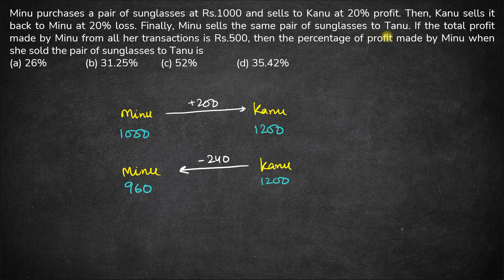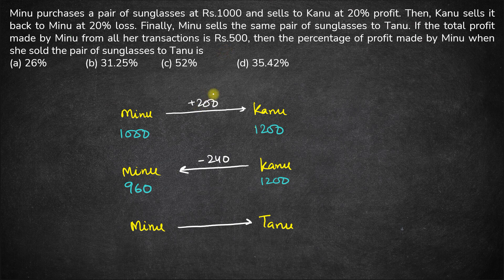Minoo then sells the same pair of sunglasses to Tanu. The total profit made by Minoo from all the transactions is 500 rupees. In the first transaction, Minoo made a profit of 200, so from the second transaction Minoo must make a profit of 300 such that her total profit is 500.